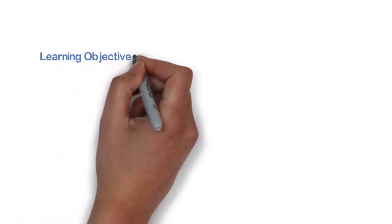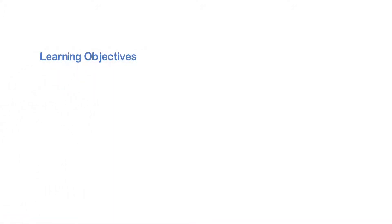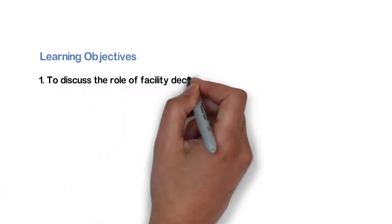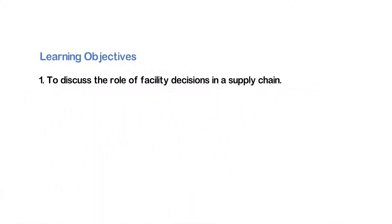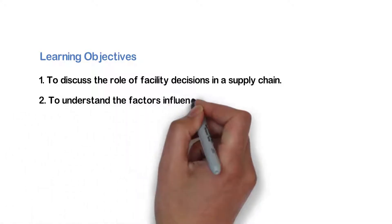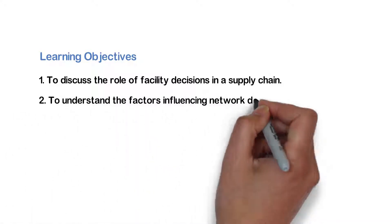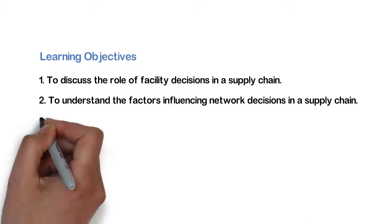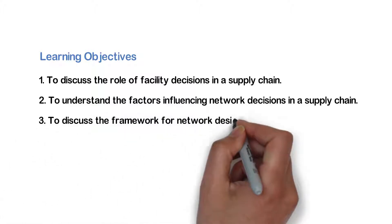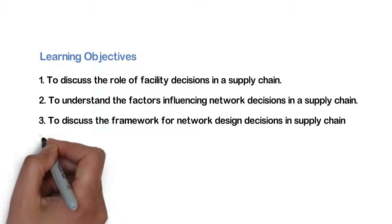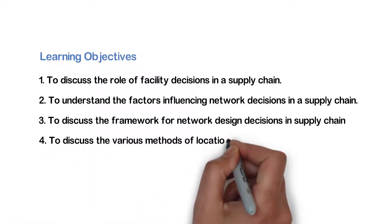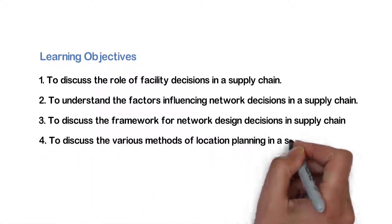The learning objectives of this module are to discuss the role of facility decisions in a supply chain, to understand the factors influencing network decisions in a supply chain, to discuss the framework for network design decisions in a supply chain, and to discuss the various methods of location planning in a supply chain.